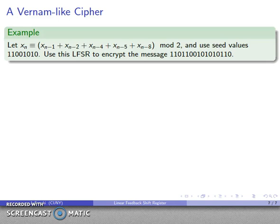It's tempting to use these linear feedback shift registers as the basis for a Vernam cipher. Well, let's see how that might work. So, what I'll do is I'll define a linear recurrence relation here. Note that each term depends on the eight terms preceding it. So, this is an eighth-order linear recurrence relation. And I need some set of initial values. I'll write down our initial values this way. And I'll use this to encrypt the message using a Vernam-like cipher.